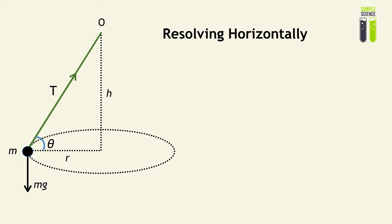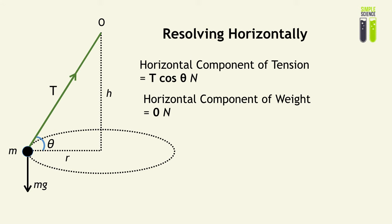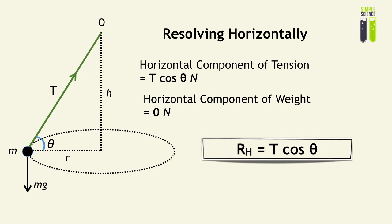A more important step in calculations involving conical pendulums is being able to resolve horizontally. Similarly to resolving vertically, we resolve the horizontal components of each of the forces acting on the object moving in circular motion. The horizontal component of the tension is equal to T cos θ, and the horizontal component of the weight is equal to zero, since there is no component of weight acting left or right.